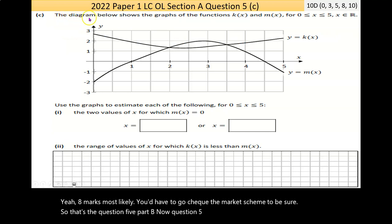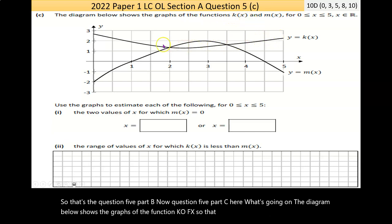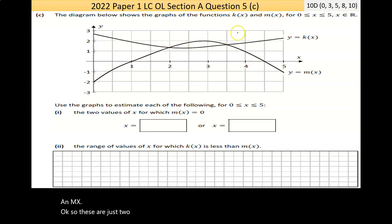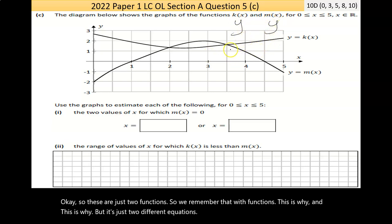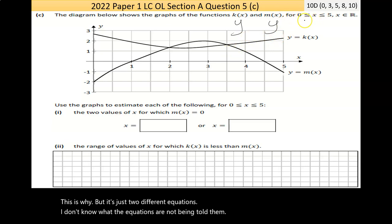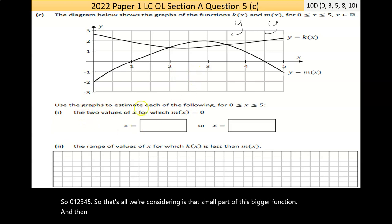Now, question 5, part C here. The diagram below shows the graphs of the function K of X, so that one there is K of X, and M of X. These are just two functions. So remember that with functions, this is Y and this is Y. But it's just two different equations. I don't know what the equations are. I'm not being told them. And it's saying for the X values 0 all the way as far as 5, that's all we're considering is that small part of this bigger function.